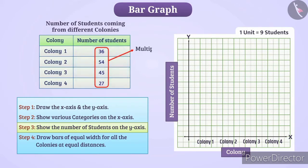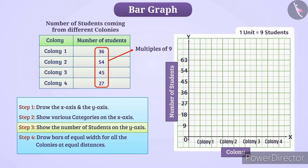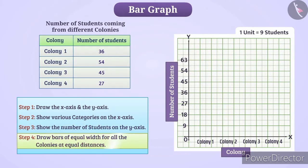We can take 1 unit equal to 9 students, because all of the numbers are multiples of 9, so we will be able to represent each number. In this way, we will show the numbers 0, 9, 18, and so on, on the y-axis. The maximum value here is 54, but for our convenience, we take numbers up to 63. Now, we will draw the bars to represent the data.